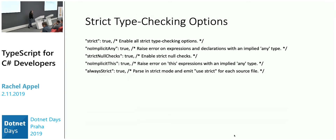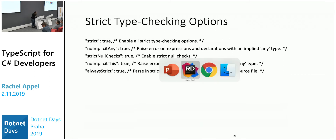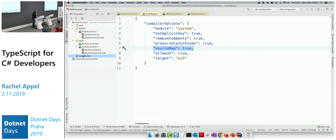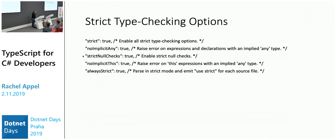Some other options are for strict type checking. You can set 'strict' for strict type checking — similar to Option Strict in VB. You can also set 'strictNullChecks' or 'noImplicitThis', which raises errors on 'this' expressions within any type. These all go into the tsconfig.json file. As long as your IDE can find that JSON file, you're good — both Rider and VS Code pick it up from the root.